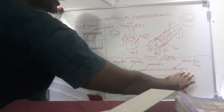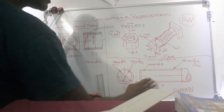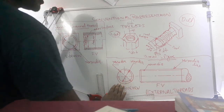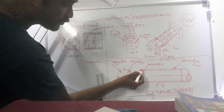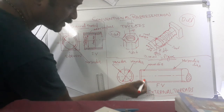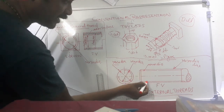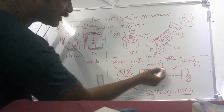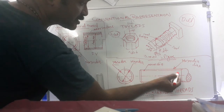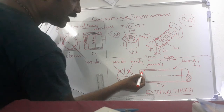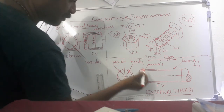This is the conventional representation of internal threads. This is the front view and this is the side view. In the front view, the external line indicates the major diameter, and this line shows the minor diameter.